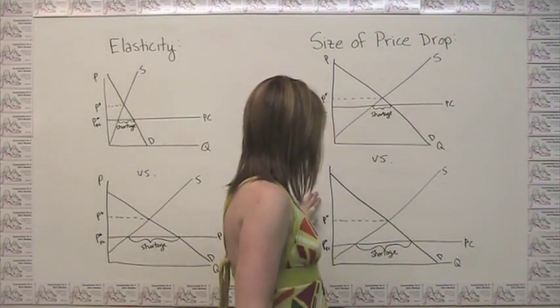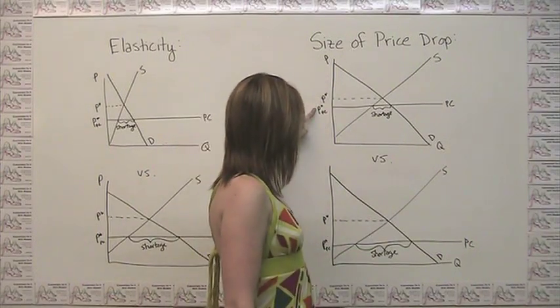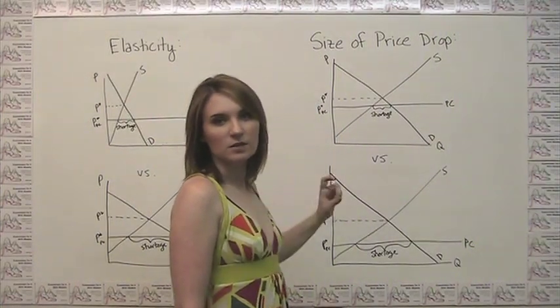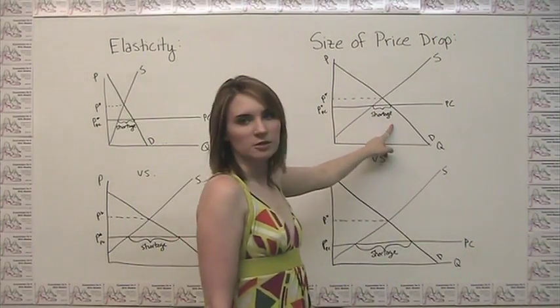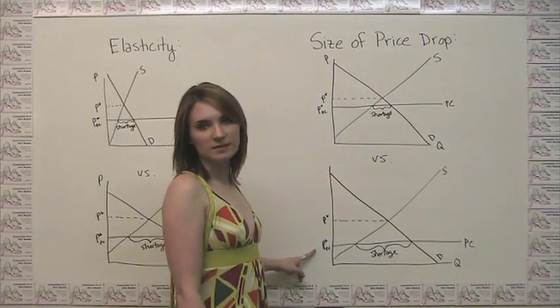So here I drew two supply and demand curves that look the same, but you'll notice when the price drop from the original equilibrium price to that with the price ceiling is only a little bit, we get a smaller shortage than we do when we end up with a bigger price drop because of the price ceiling.